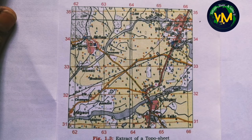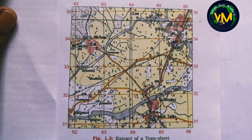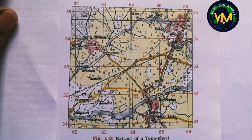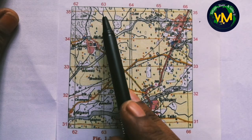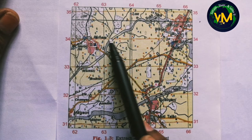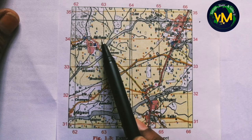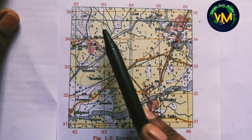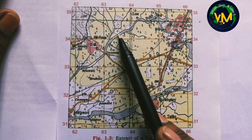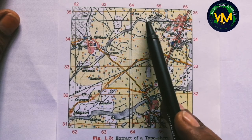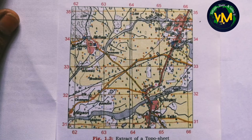Now let's find the grid square for a given number. The question is: what is the name of the river in grid 6334? We have two rivers — Sukhli Nadi and Sipu Nadi. Line 63 is the easting and line 34 is the northing. The point of intersection gives us the square 6334. There is a river here written as Sukhli Nadi. So the answer is Sukhli Nadi.